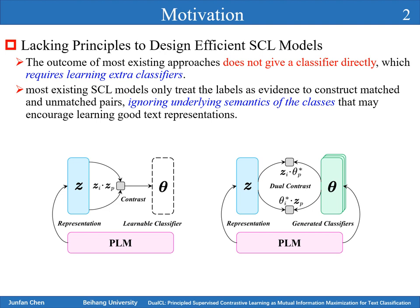The motivation of our paper is that existing works lack principles to design efficient SCL models. Specifically, the outcome of most existing approaches does not give a classifier directly, which requires extra classifiers. In addition, most existing SCL models only treat the labels as evidence to construct matched and unmatched pairs, ignoring the underlying semantics of the classes that may encourage learning good text representations.